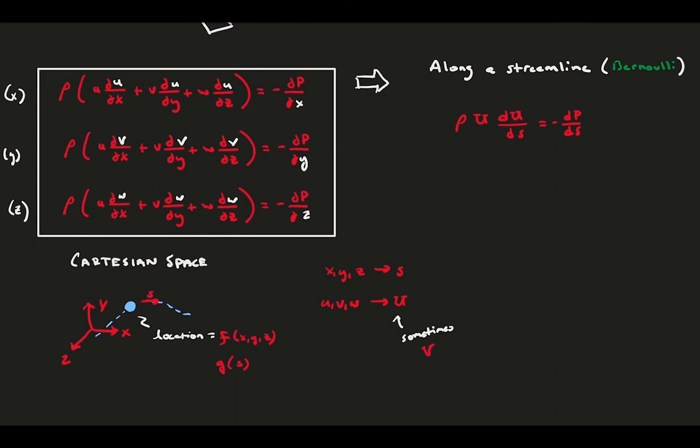We get that the convective acceleration along the streamline is due to a pressure gradient in the streamline direction. Let's get rid of ds on both sides, integrate, and then we'll have an expression that balances pressure and the square of the velocity.